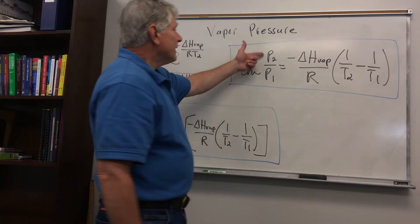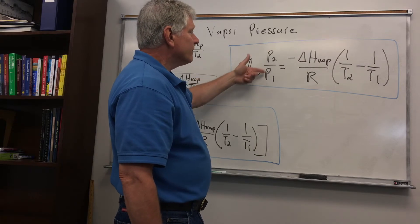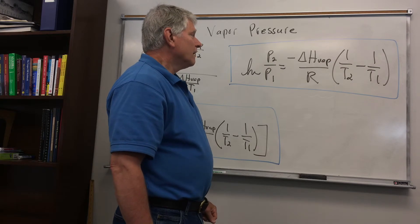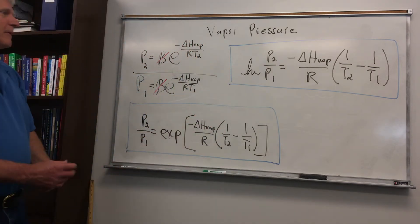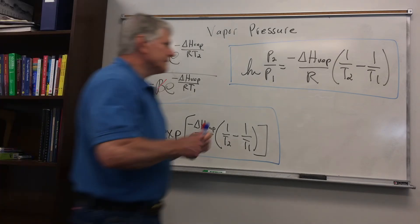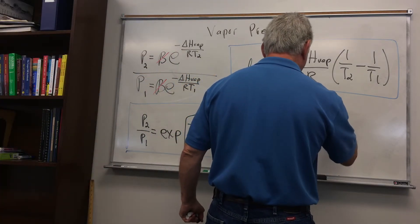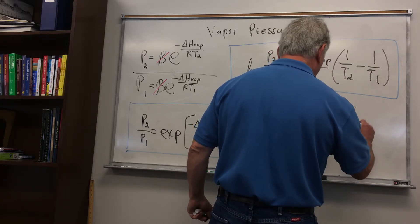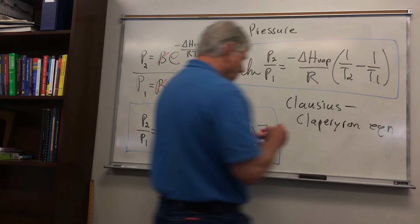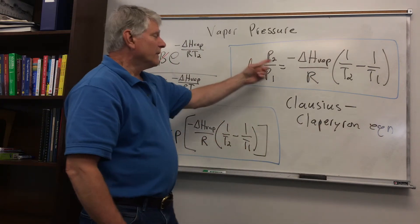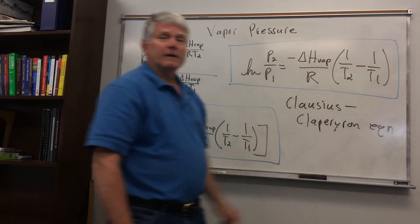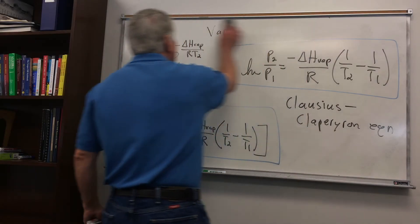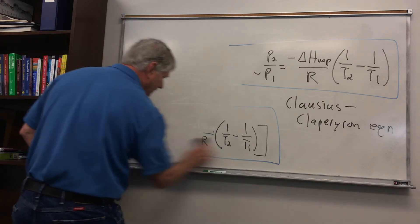If we know the two vapor pressures, we can solve for one of the temperatures. These two forms of the same equation are called the Clausius-Clapeyron equation, and it equates the vapor pressure of a liquid at different temperatures.